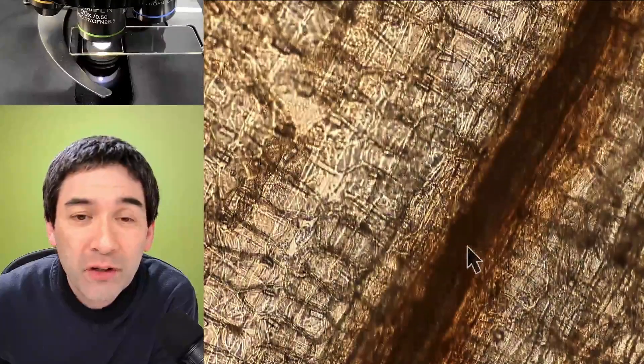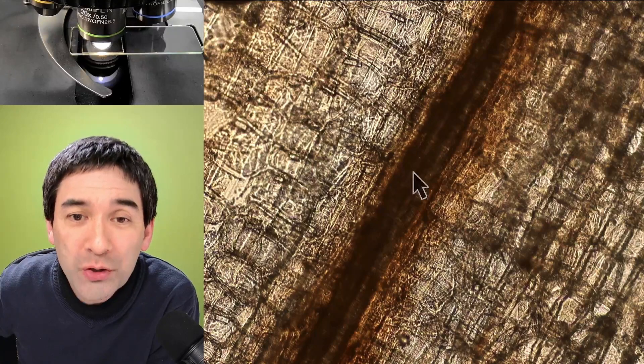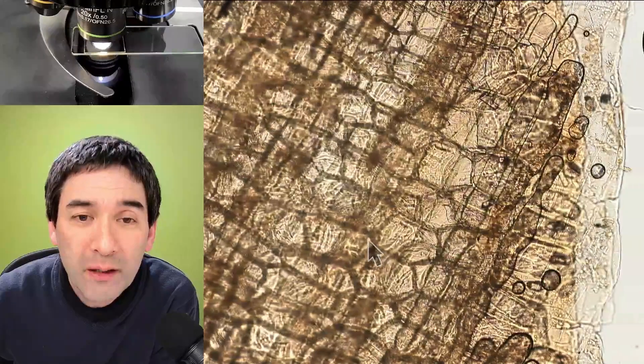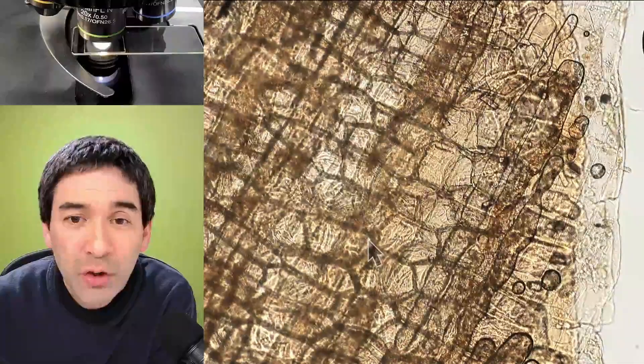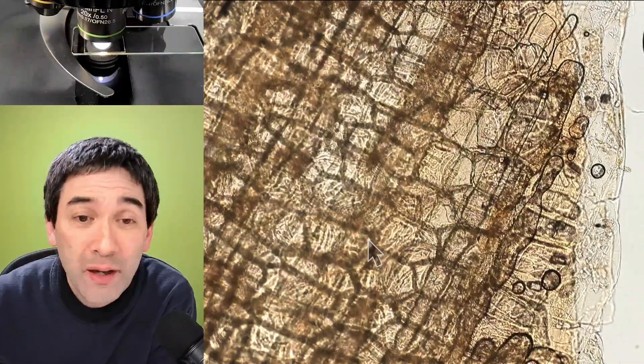You can also see over here those dark lines that you see, these are most likely the vessels that transport water inside the onion. But you can see that the oil as a matter of fact causes this onion skin, the onion tunic, to become quite transparent.